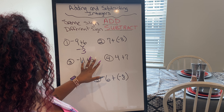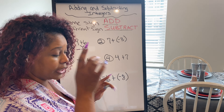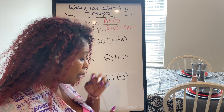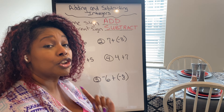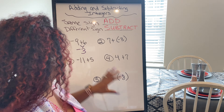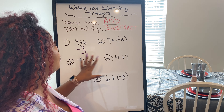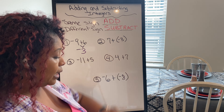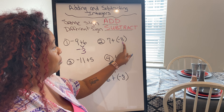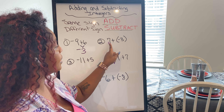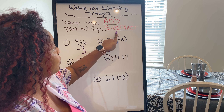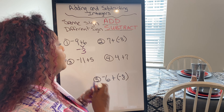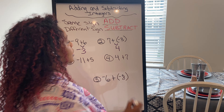The sign that was with the 9 stays with the answer, so my answer is negative 3. Let me show you another example. We have 7 plus negative 3 — are my signs the same? They're not the same, so when they're different I have to subtract. I take 7 and pull off 3, which gives me 4.